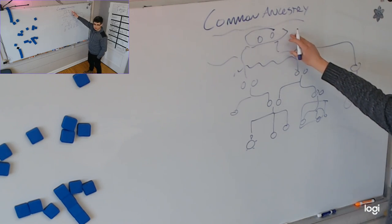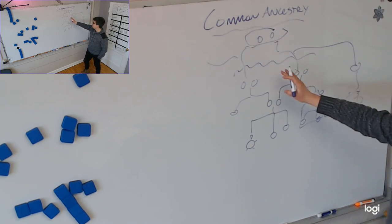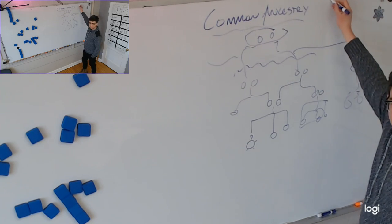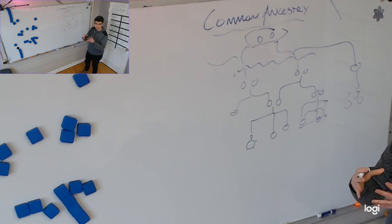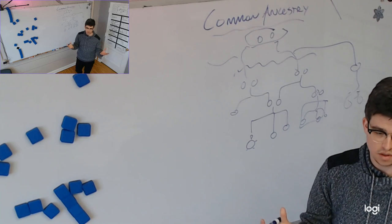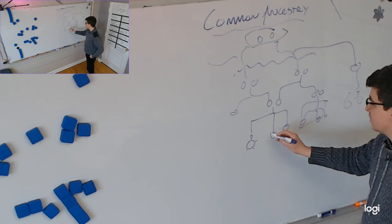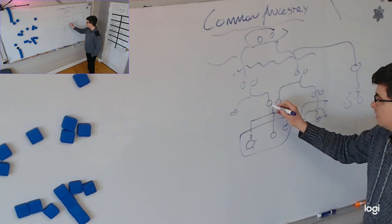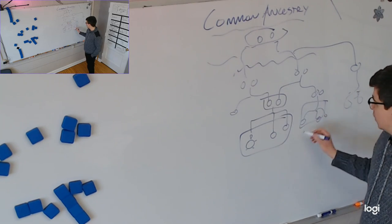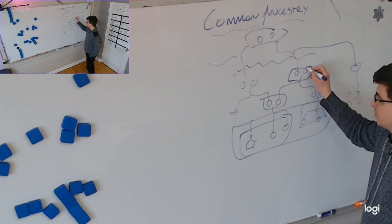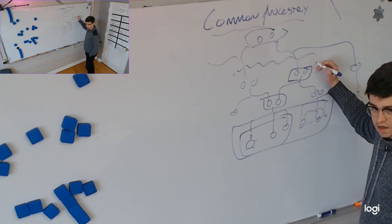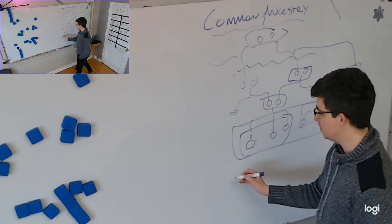But the point of all this is that if we go far enough back, keep going back, eventually all of humanity is related. The most distant cousin you could possibly have who's a human being might be your 15th cousin. If we go far enough back with these people, they have common ancestry. Is this chart kind of making sense to you? So let's define common ancestry.